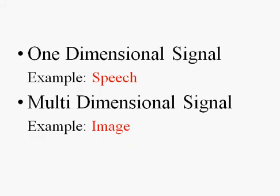When the function depends on a single variable, the signal is said to be one-dimensional, and speech is the best example for that. When the function depends on two or more variables, the signal is said to be multidimensional, and an image is the best example. The horizontal and vertical coordinates of the image represent the two dimensions.